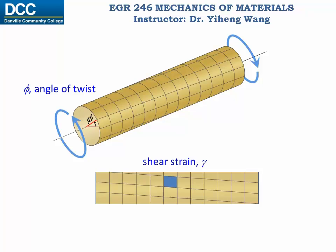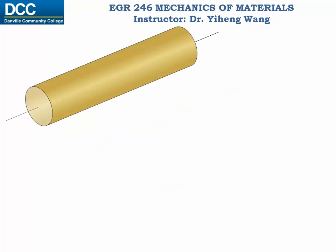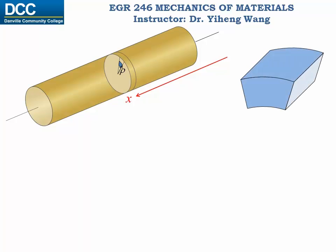Now we're going to characterize the shear strain and angle of twist during this deformation. Let's look at an arbitrary axial position x. At this position, located inside this shaft is a disk of thickness dx. Within this disk, if we look at an arbitrary radial position rho measured from the center of the disk, and focus on a segment at this location — imagine we carve this segment out and zoom in on it — this is the radial position rho and here is the thickness of the disk dx.